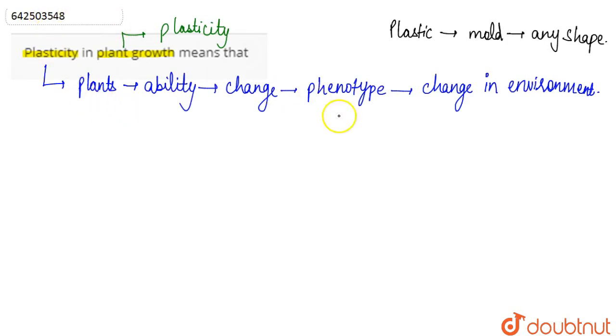It is basically the ability to adapt as per to the changes in the environment. That's basically known as plasticity. This means that the plant has the ability to mold itself in a way as per to the environment.